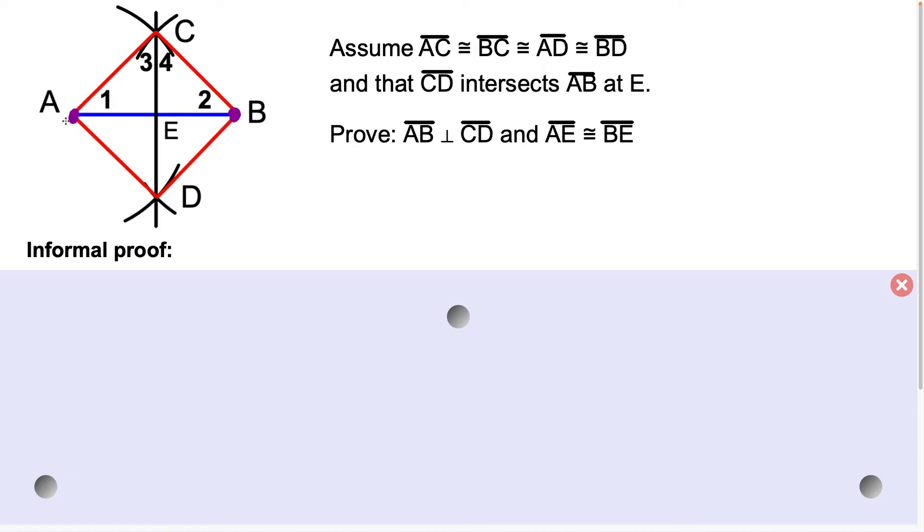So because the compass didn't change length, all four of these segments are equal in measure. So that means AC is congruent to BC, which is congruent to AD, and that's congruent to BD. So this is all we could assume.